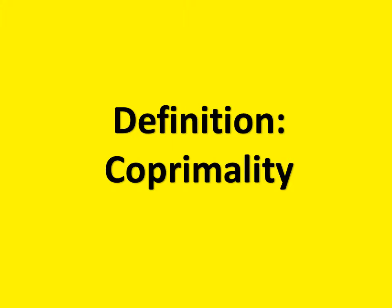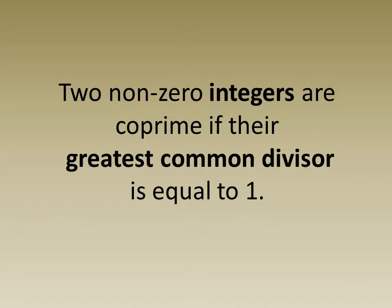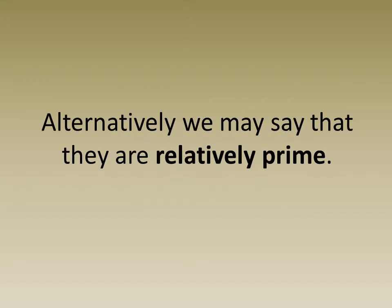Definition. Coprimality. Two non-zero integers are coprime if their greatest common divisor is equal to 1. Alternatively, we may say that they are relatively prime.